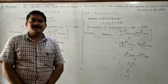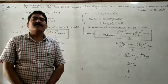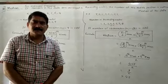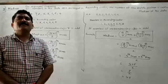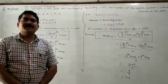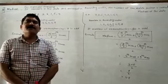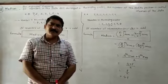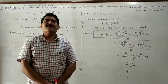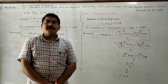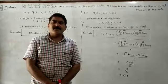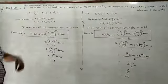For the ungrouped frequency distribution table, I will teach how to find the median in this lesson, and for the next lecture I will explain the grouped frequency distribution. If the frequency of the classes are given, that is called the grouped frequency distribution table. If only the individual frequency of each element is given, that is called the ungrouped frequency distribution.